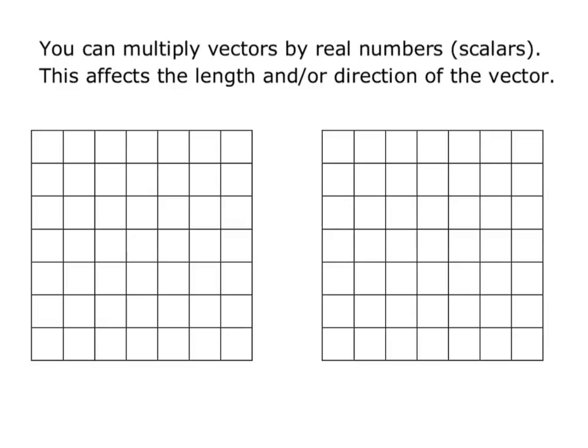You can multiply vectors by real numbers or scalars, and this affects the length and/or direction of the vector. So I'm going to start with vector u, and let's say I multiply that by 2. What that is going to do is stretch it out so that it's twice as long, but it will have the same direction as vector u. So I end up with vector 2u, and it has the same initial point as u, but the length is twice as long.